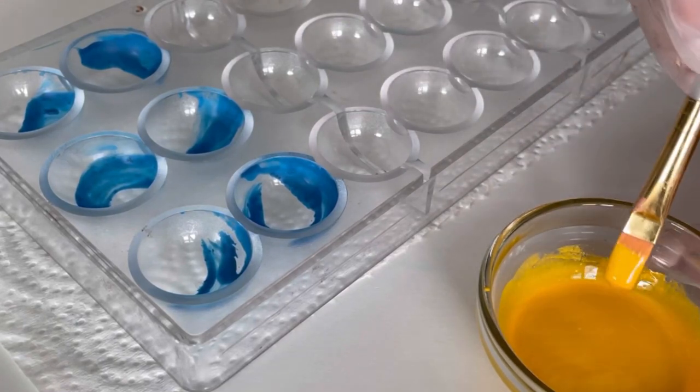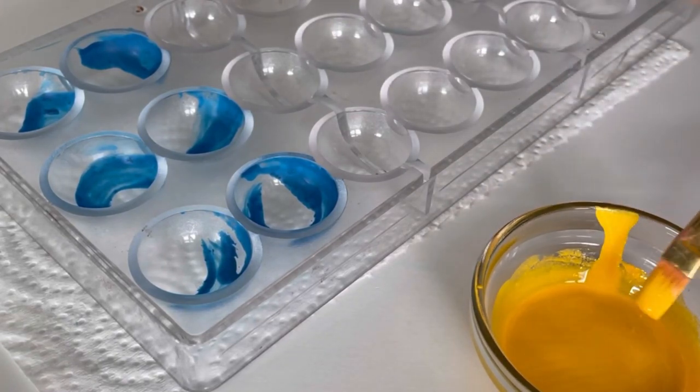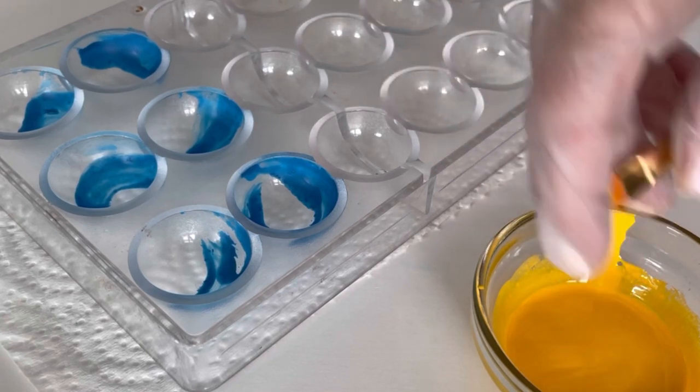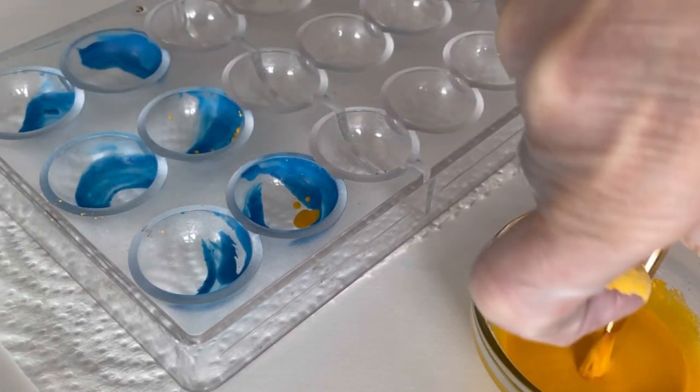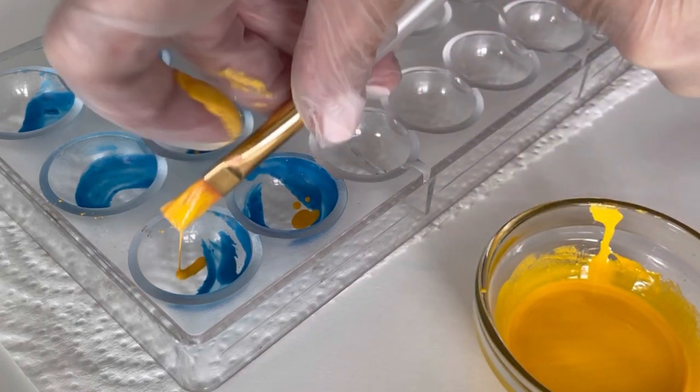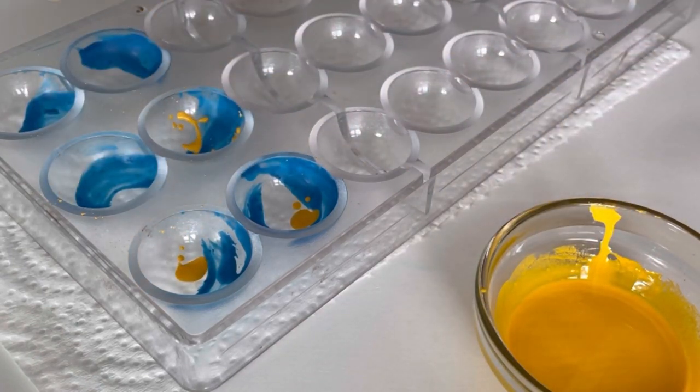Let's add another color to the mold. I have already tempered the yellow cocoa butter. I'm using a paintbrush to flick the cocoa butter inside the cavities, but I would suggest maybe using a toothbrush—you'd probably get better results.